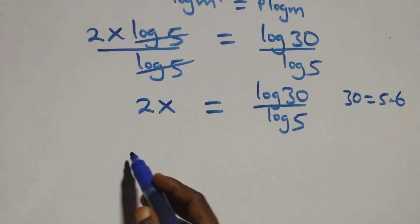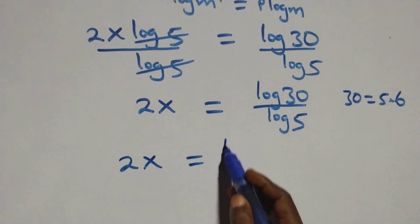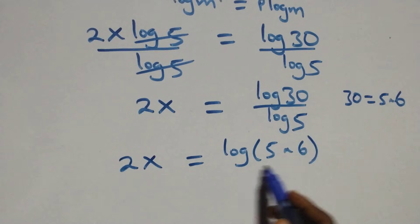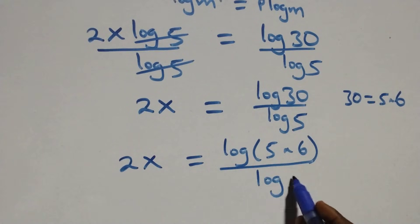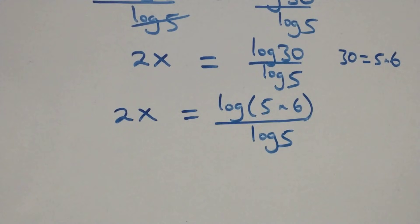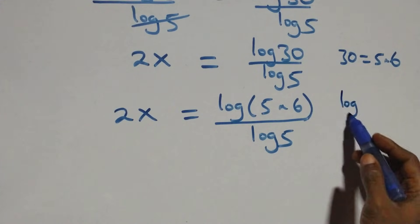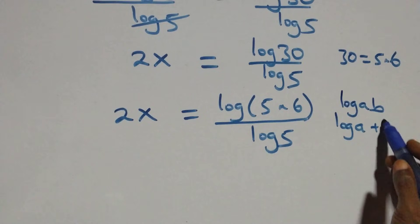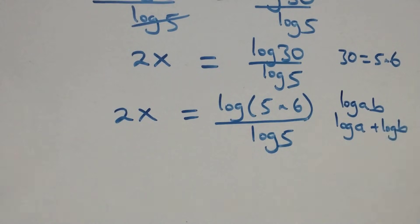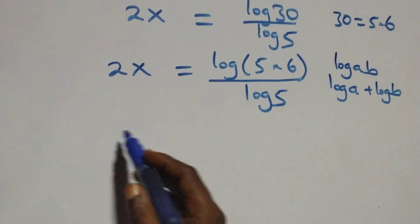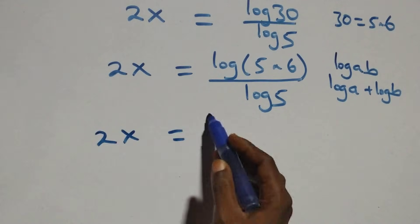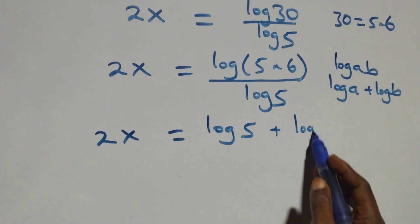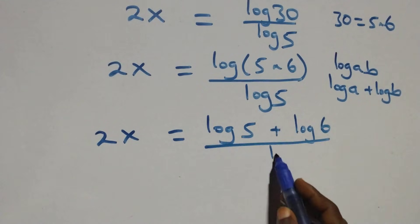Which implies we have 2x equals log(5 times 6) over log 5. This follows the product rule of logarithms: log(a·b) is the same as log a plus log b. So we have 2x equals (log 5 plus log 6) over log 5.